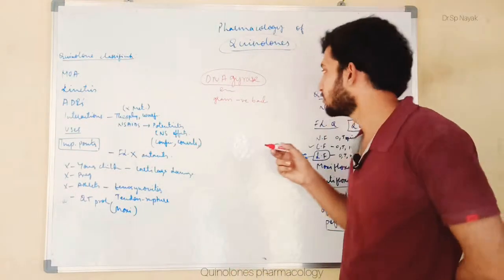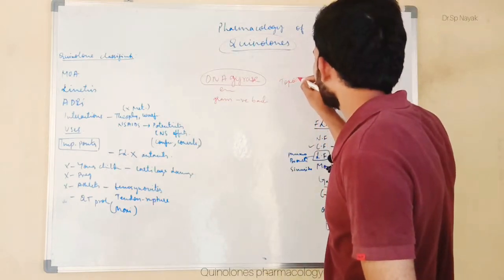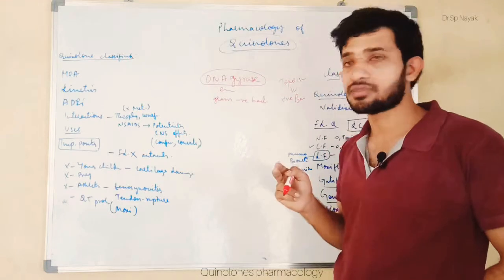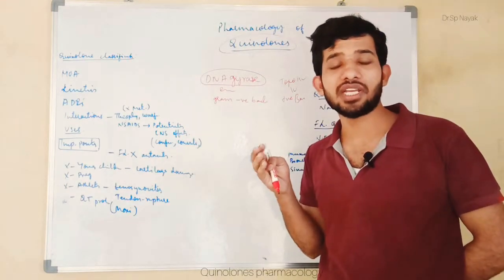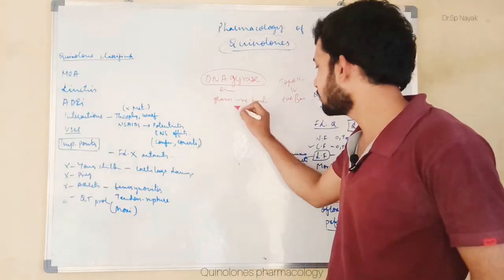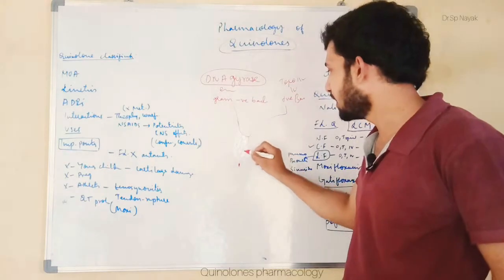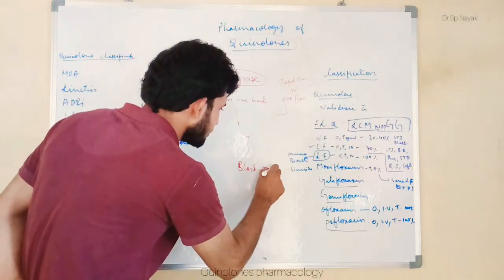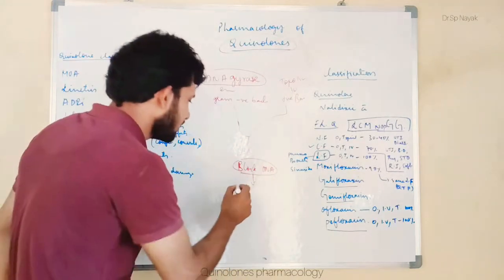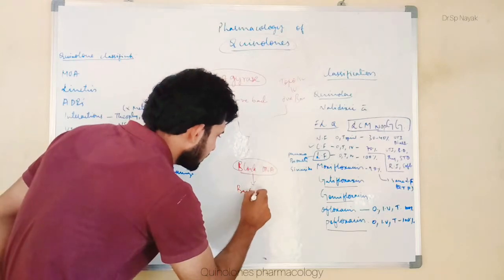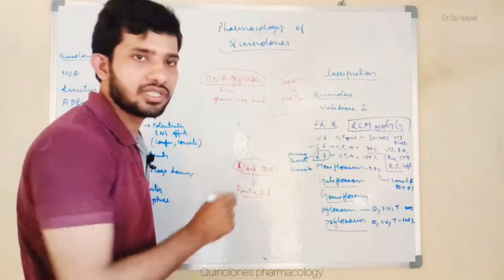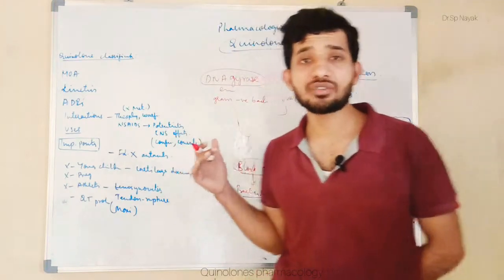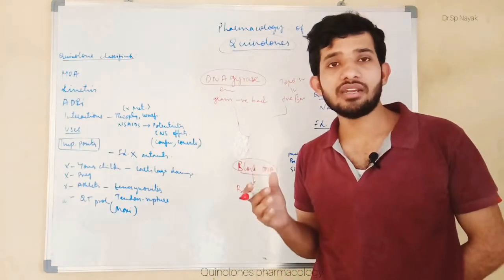Fluoroquinolones also have another mechanism — they bind topoisomerase 4 in gram-positive bacteria. So they have two different mechanisms, and because of these two mechanisms, it is a broad-spectrum antibiotic that works on both gram-positive and gram-negative bacteria. By binding these two enzymes, it blocks DNA synthesis, and by this it acts as a bactericidal agent. So this is different from cell wall synthesis inhibitors — it acts on bacterial DNA synthesis.